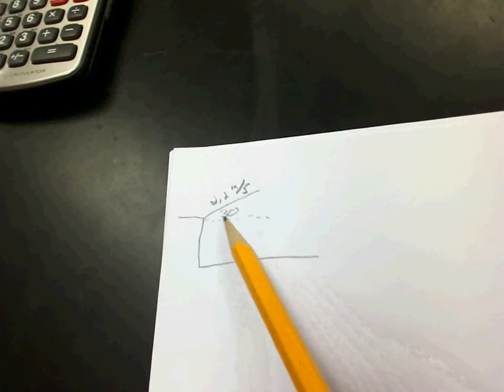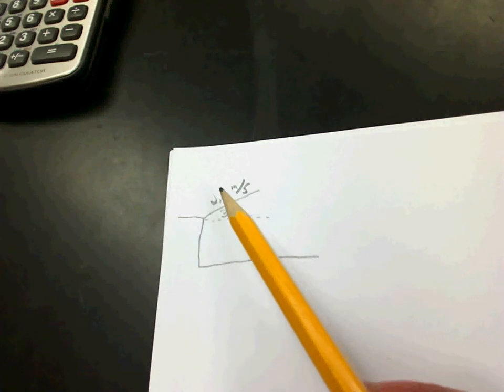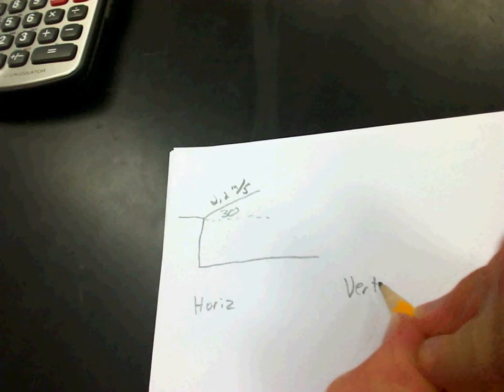Today in our warm-up problem, we had Olive was swinging. She launched herself at a 30-degree angle of the horizontal at a rate of 2.2 meters per second. Part A of that was fairly simple. It was just to find the horizontal and the vertical components of that, of her velocity.